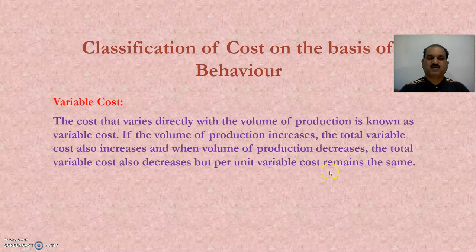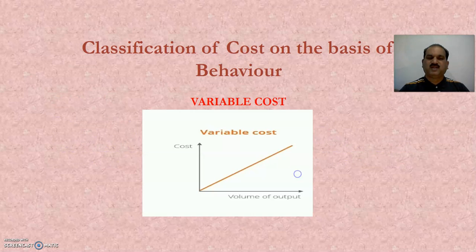This is the figure for fixed cost, where the x-axis shows volume of output and the y-axis shows cost. The line representing cost and volume of output runs parallel. Variable cost is the cost that varies directly with volume of production. If volume of production increases, total variable cost also increases; when volume decreases, total variable cost also decreases. But per unit variable cost remains the same. The variable cost line on the graph originates from point O, going upward between the cost and volume of output axes.